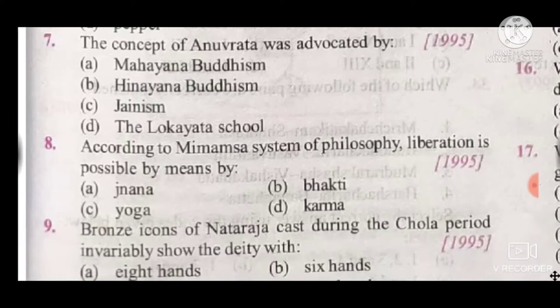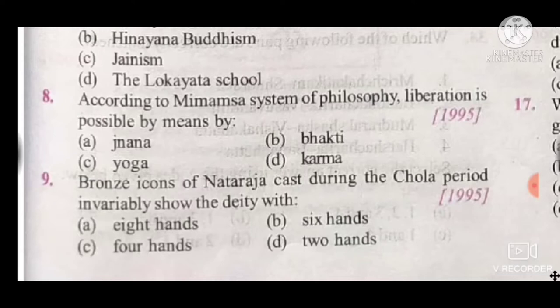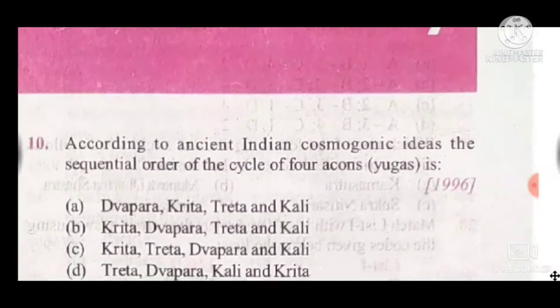Question 9: Bronze icons of Nataraja cast during the Chola period invariably show the deity with — the answer is four hands; option C is the correct answer.